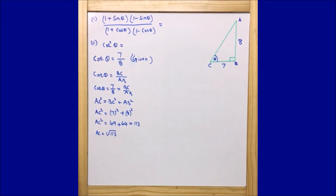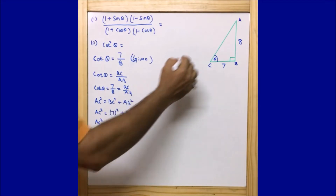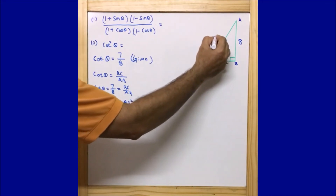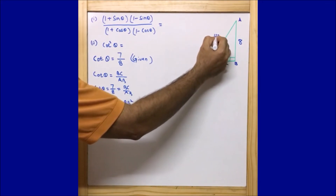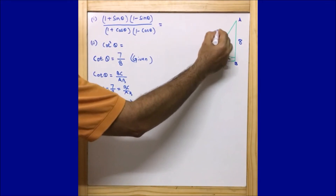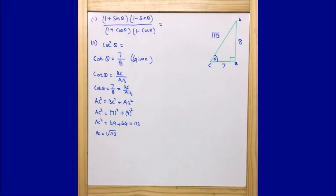We are able to find out the missing side as √113. So the missing side AC = √113.